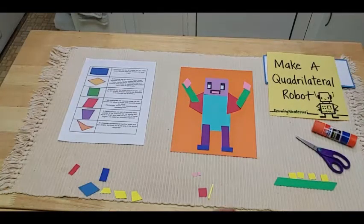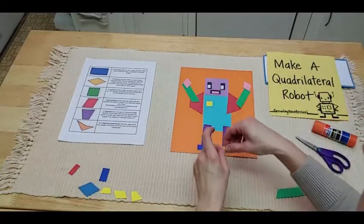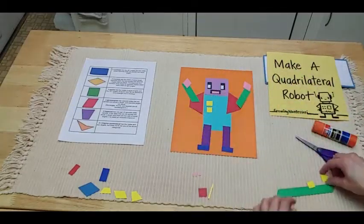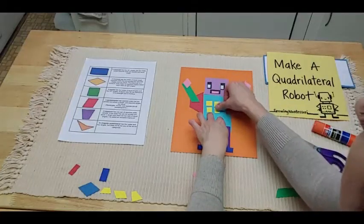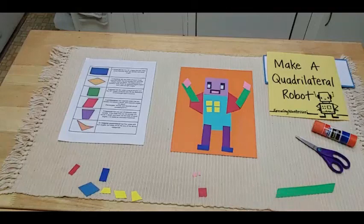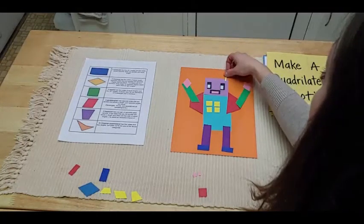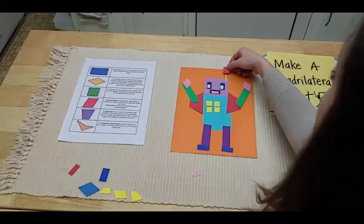Hmm. What else? I feel like I need some more squares. I have a lot of squares. These are going to be some buttons. So that my robot can be turned on and off. Ooh, I think I'm going to put an antenna. That would be fun. It's a little antenna. Let's put this up on top.